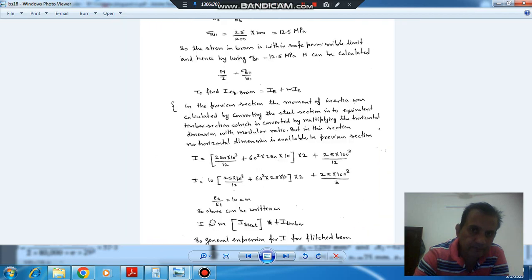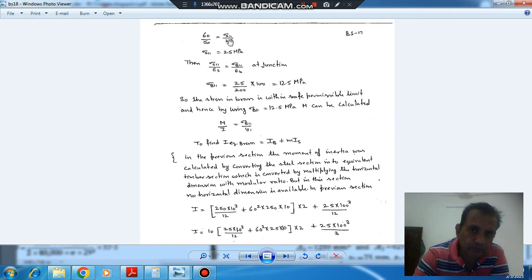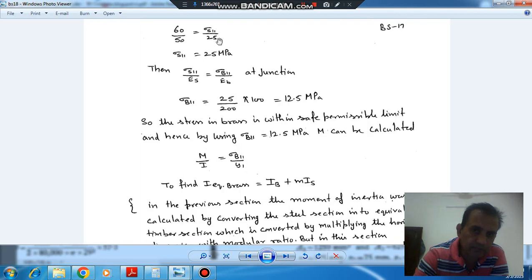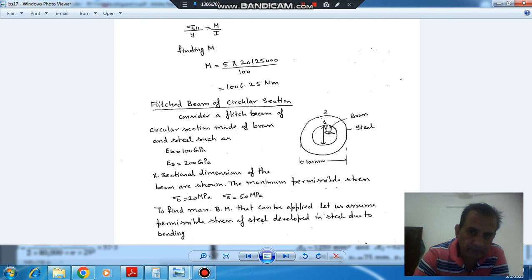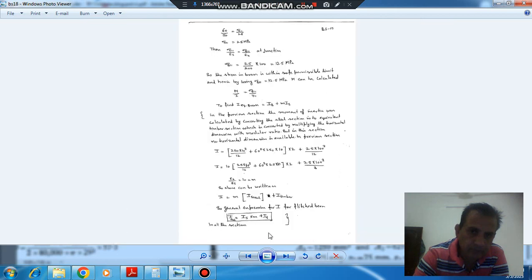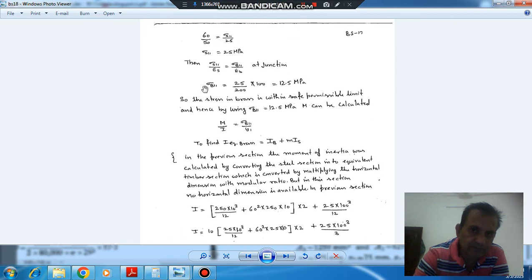And at 1-1, it will be for steel, σ_S1, and y is equal to 25. So σ_S1 comes out as 30 MPa. So this is the stress generated at 1-1 for steel.